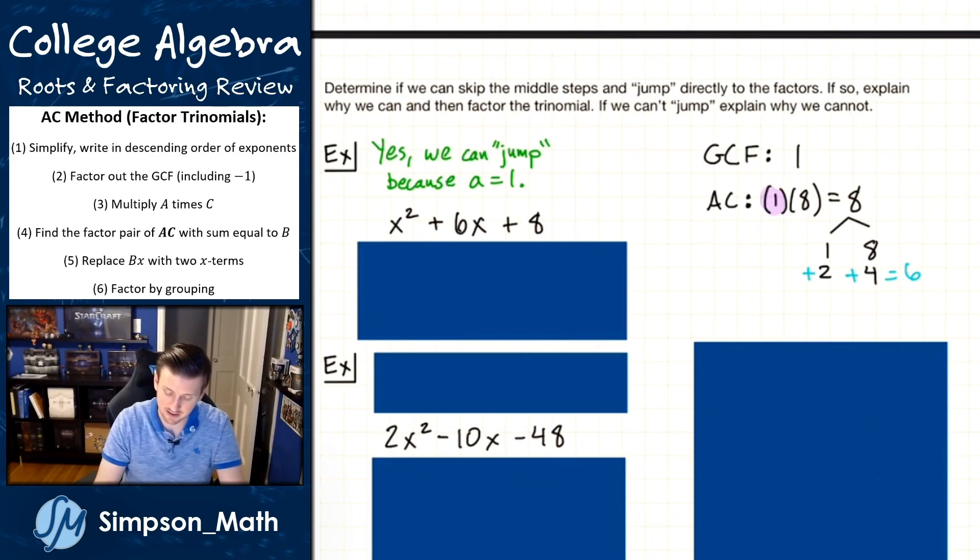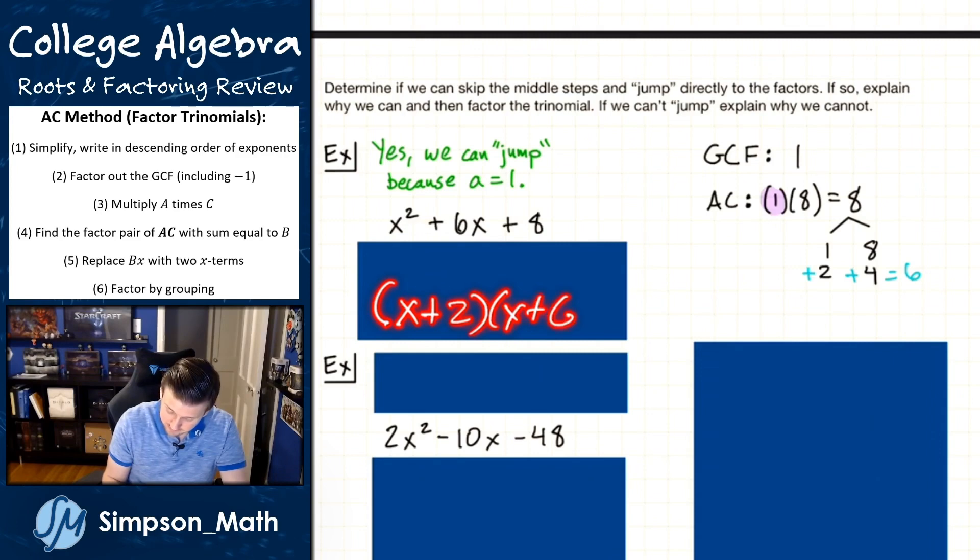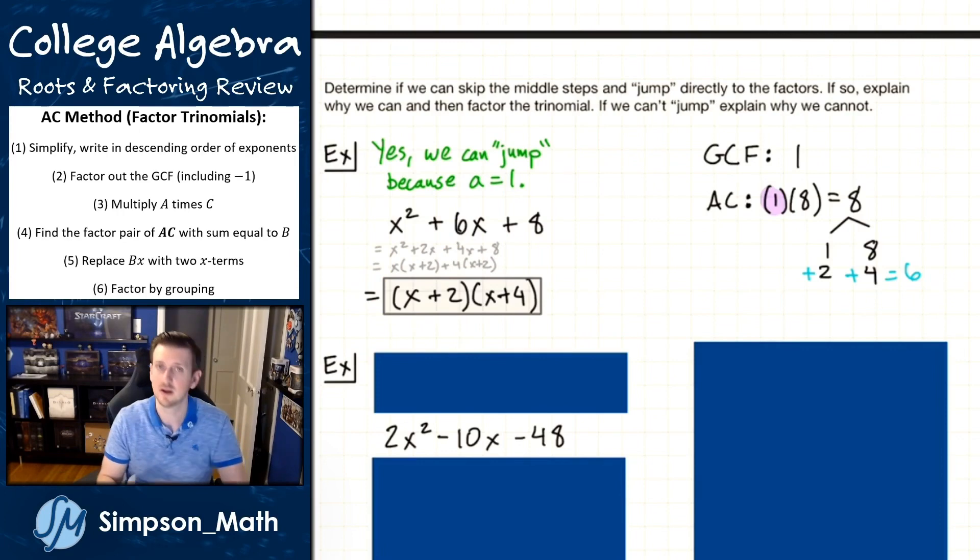And I'm able to jump directly and say, I don't care about any of the other math, any other steps, I know that this factor is going to end up with x + 2, x + 4, directly from this. So let me uncover that and show you. Immediately, x + 2, x + 4.